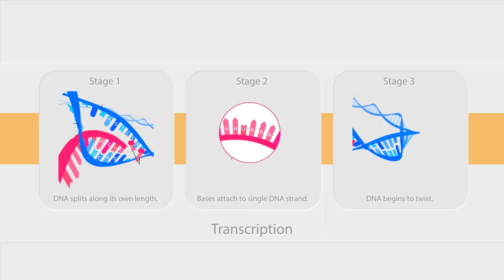Stage 3. While the bases attach to the strand, each of the two newly formed double helix starts to twist. The process continues along the whole length of the DNA, eventually producing two identical double DNA strands.